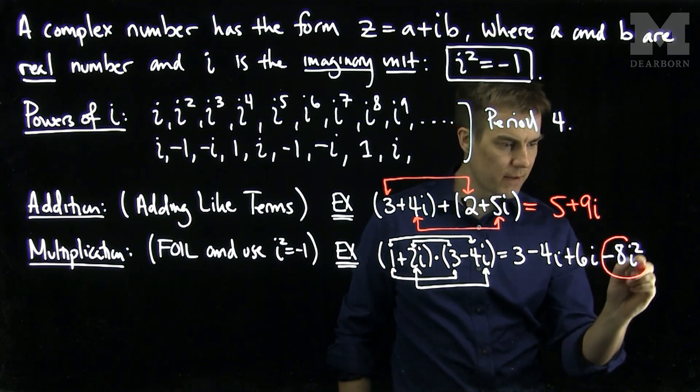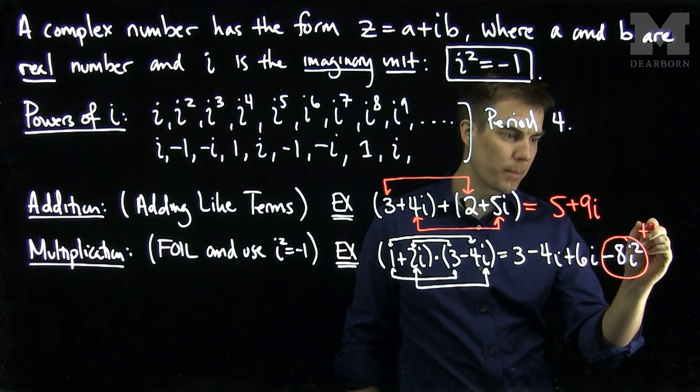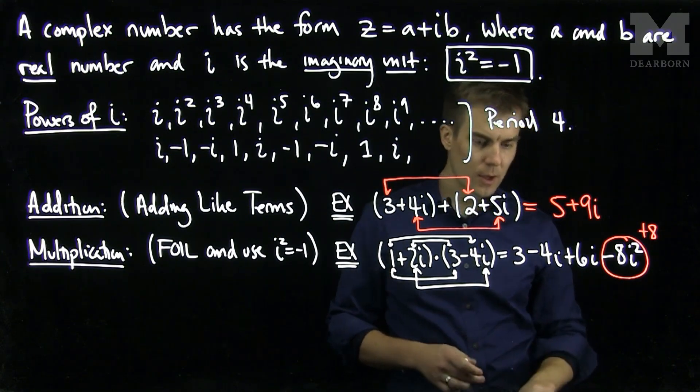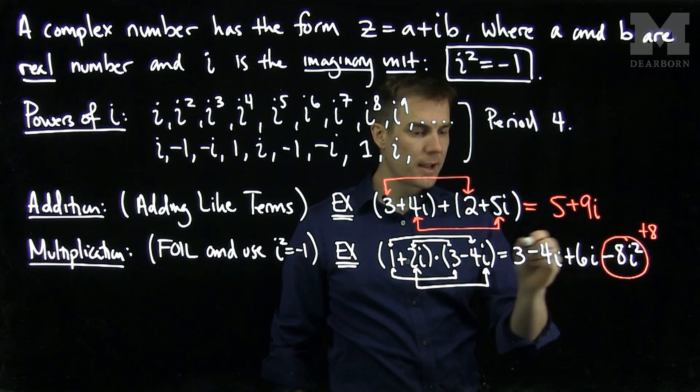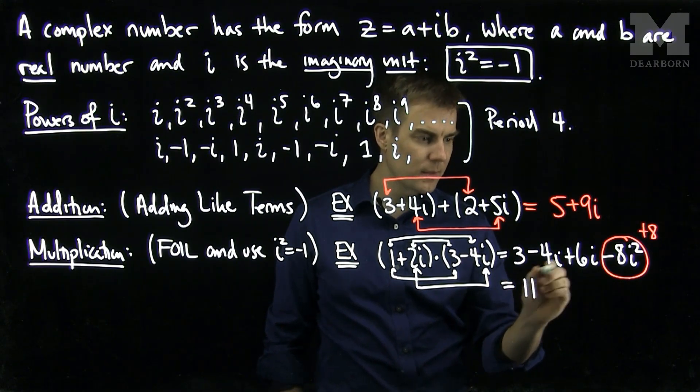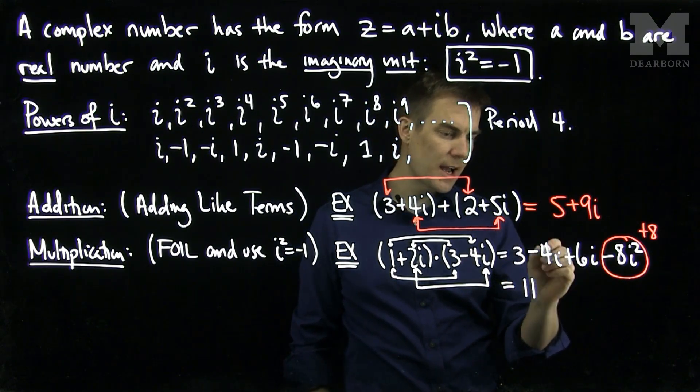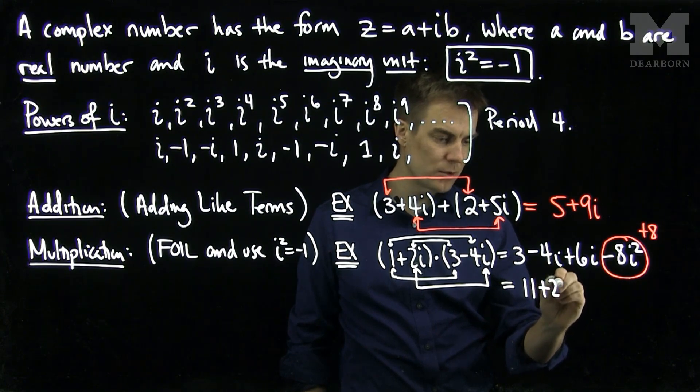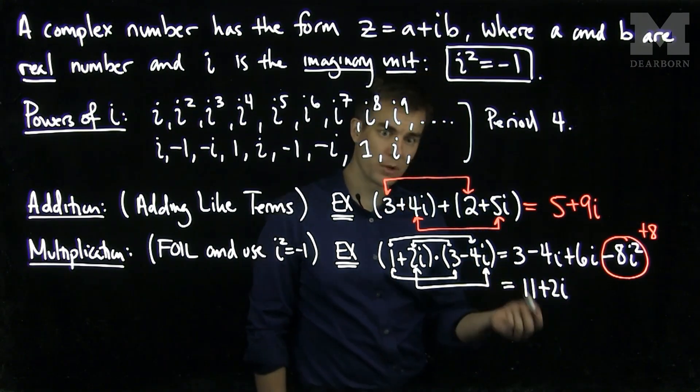Now we simplify the i squared term. This negative 8i squared term will turn into a positive 8 since i squared is negative 1. So now I will have a positive 8 and a positive 3, which will give me an 11. I'll have a positive 6i and a negative 4i, which will give me a 2i. And that is how we multiply complex numbers.